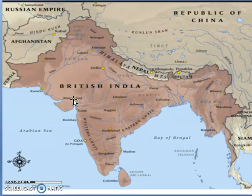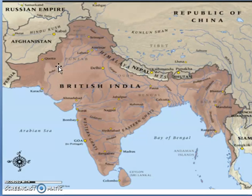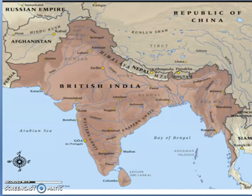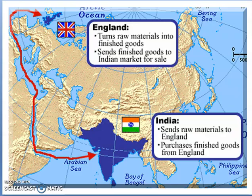I want to show you this map of British India — you can see how much area they captured at that time. From here you can see that Pakistan was going to be created. As we discussed, in 1857 people availed the opportunity, and as a result of that, Pakistan came into being later on. This map also shows the territory of Pakistan.